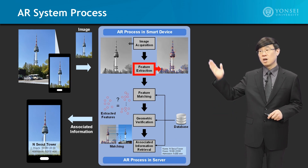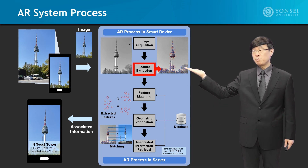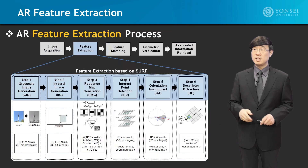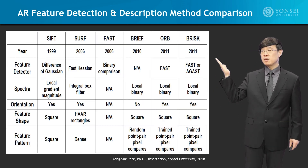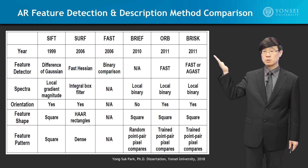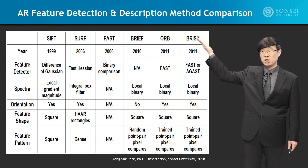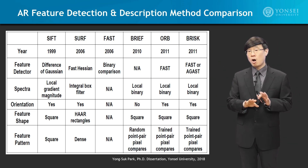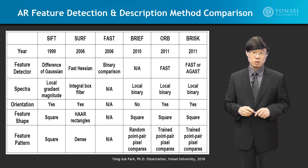Looking into the details of this Augmented Reality process, one of the most challenging parts is the feature extraction. We will focus on the details of how it's actually done, and look into some of the most popular techniques used — these are the techniques that Augmented Reality uses in terms of feature detection and description. Since these techniques are used in almost all Augmented Reality devices, we will take a closer look into them.